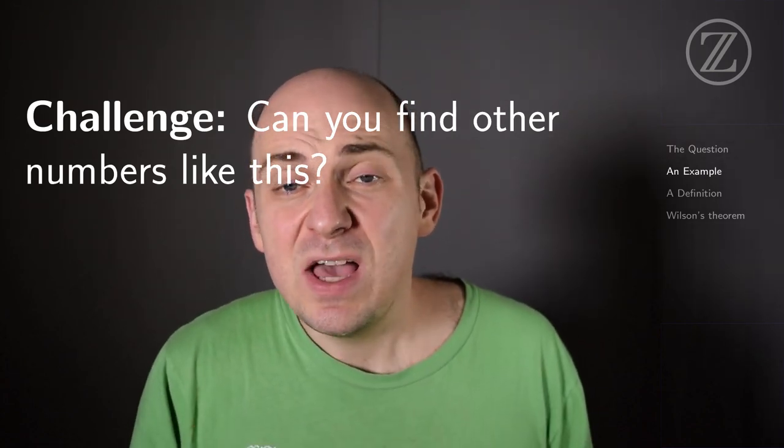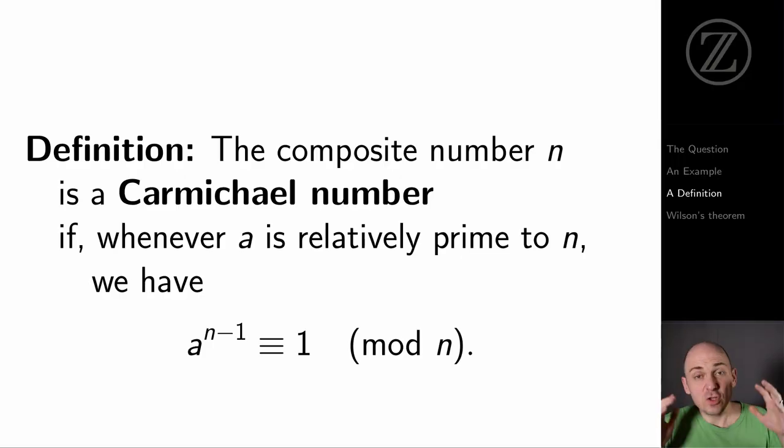So a challenge to you, can you find any other numbers with this property? So the property is the property of being a Carmichael number. What does it mean to be a Carmichael number? Well, I say that a composite number n is a Carmichael number if it looks like it satisfies the conclusion of Fermat's Little Theorem. So that means that whenever a is relatively prime to n, then a to the n minus first power is congruent to 1 modulo n. And I have to be a little bit careful here because usually Fermat's Little Theorem is phrased as saying that a is non-zero modulo p, and here we're just saying that a is relatively prime to n.